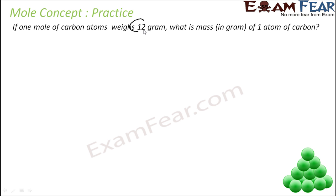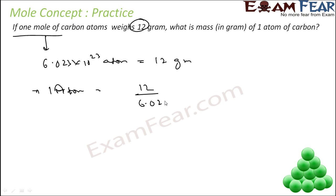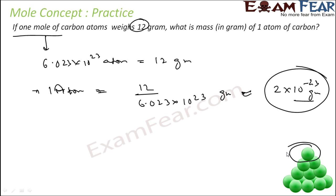The question is: 1 mole of carbon atom weighs 12 grams — find the mass of 1 carbon atom. We know that 1 mole of carbon atom is 6.023 into 10 to the power 23 atoms, and this weighs 12 grams. So the mass of 1 atom will be 12 divided by 6.023 into 10 to the power 23 grams, which is approximately 2 into 10 to the power minus 23 grams.